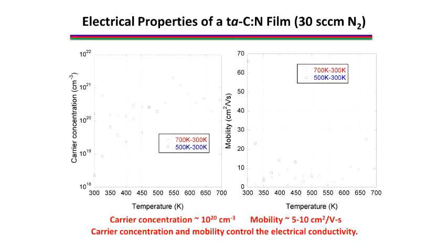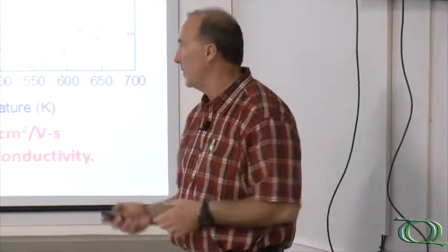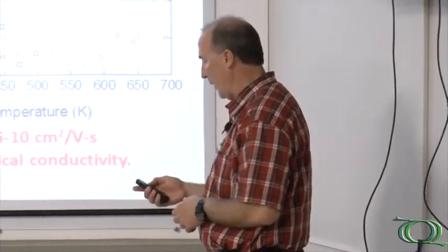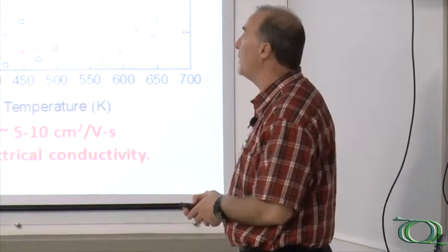The material has a lot of grain boundaries, a lot of nodules, so there's a lot of scattering. The mobility is low but carrier concentration is high, so we have a conductivity that is 10 to the minus 2 or so. Very good electrical properties for what we would need to do electrochemically.